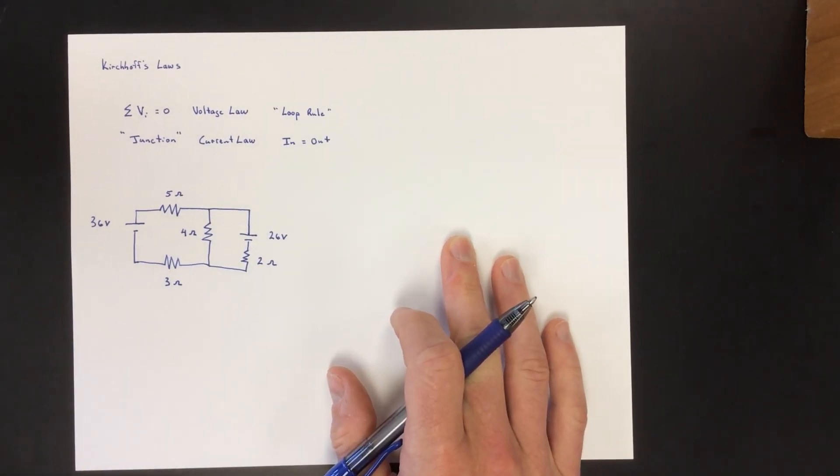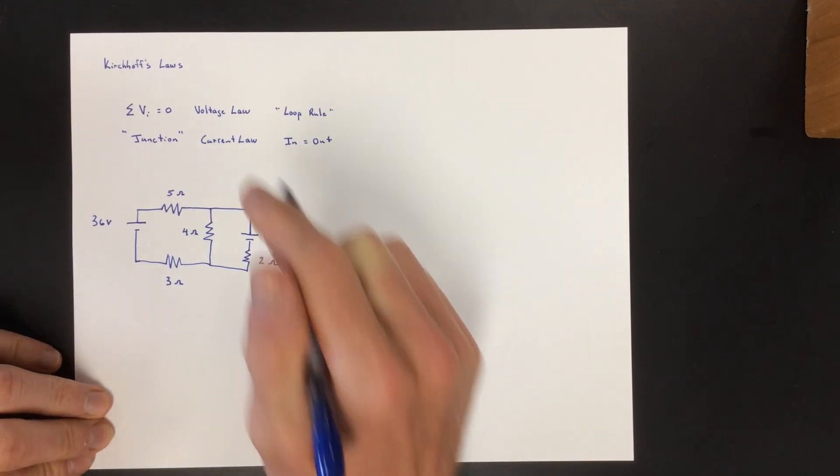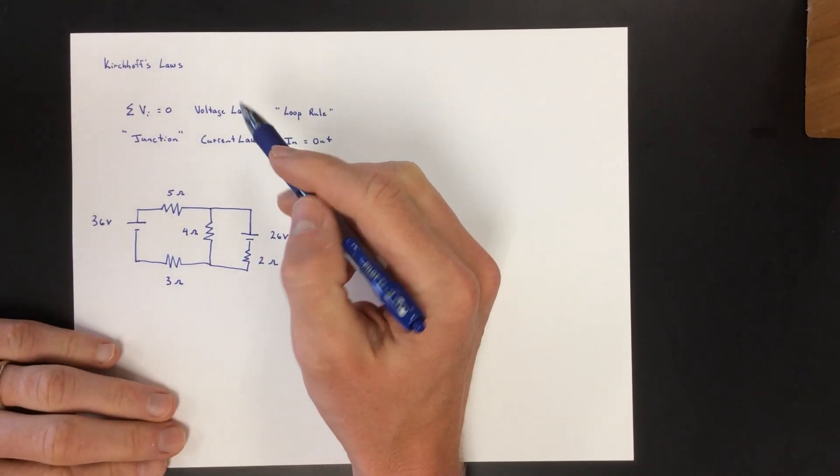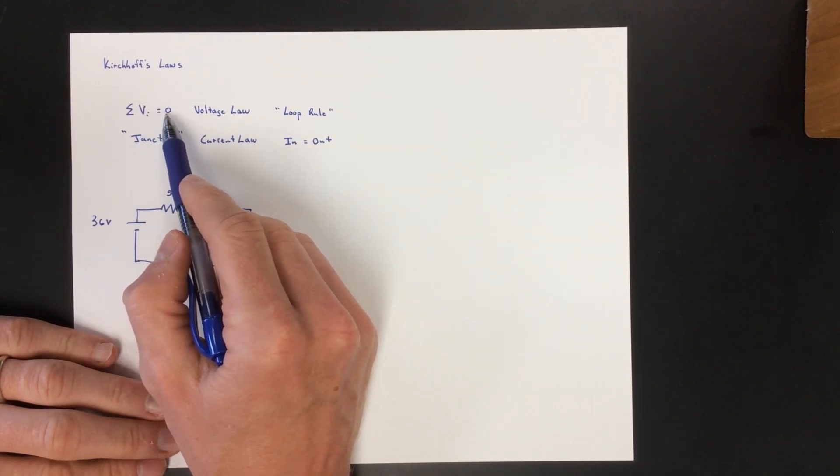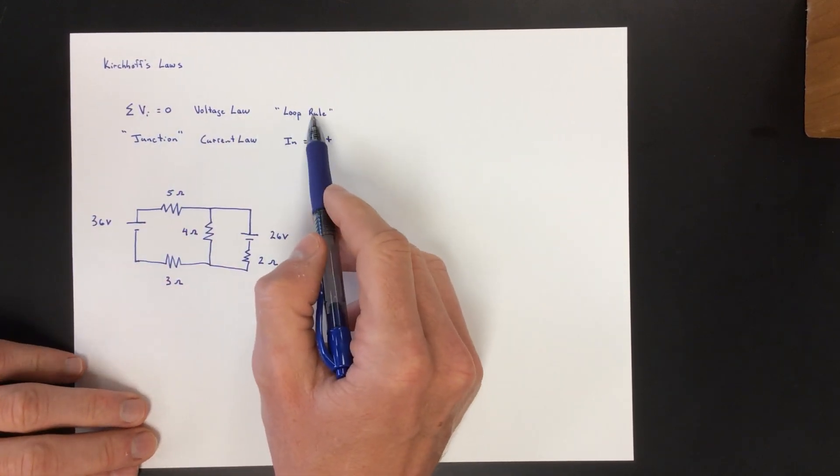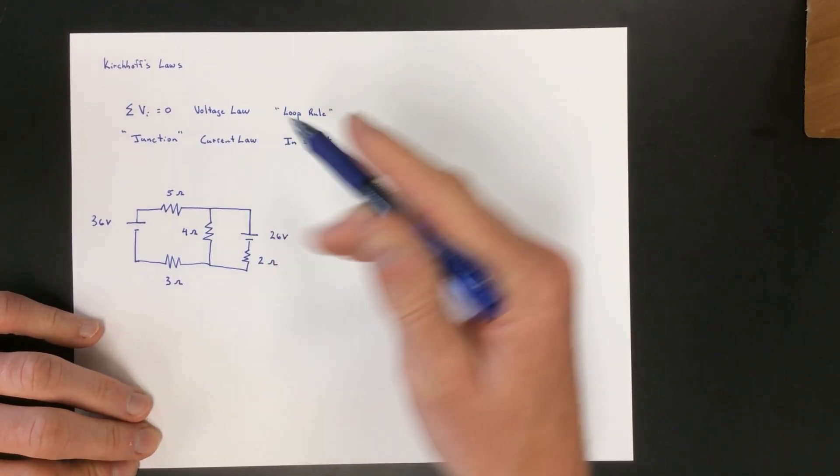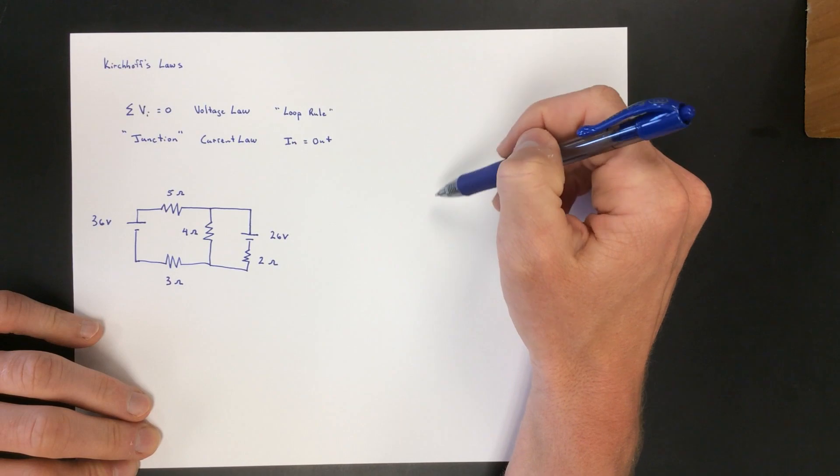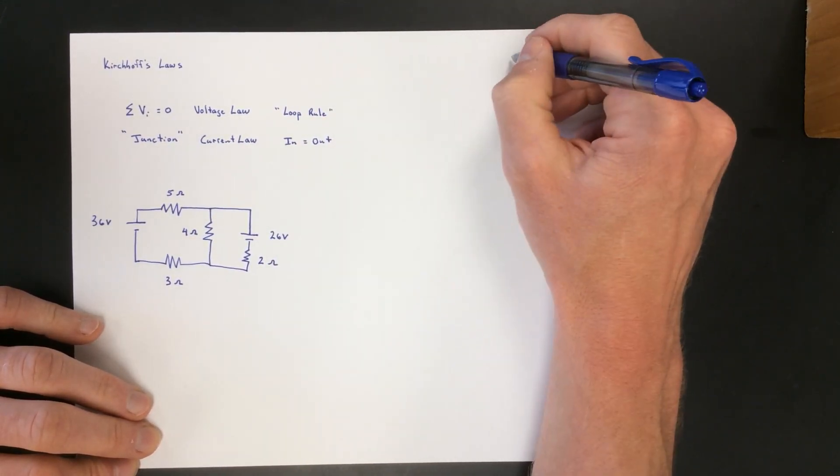Hi, we've talked about these laws. Kirchhoff's law number one is the voltage law, and that says that the sum of all the voltage over a loop is zero. Most people just call it the loop rule.